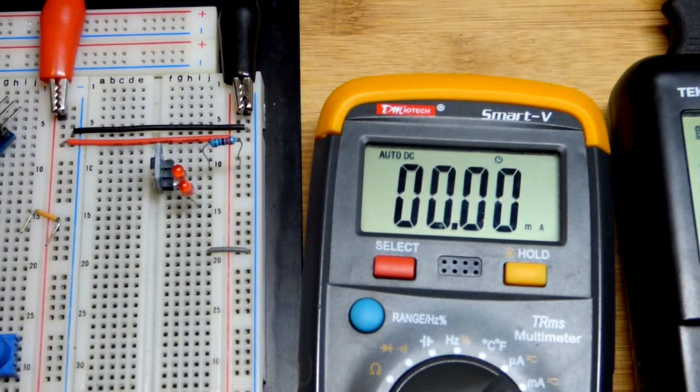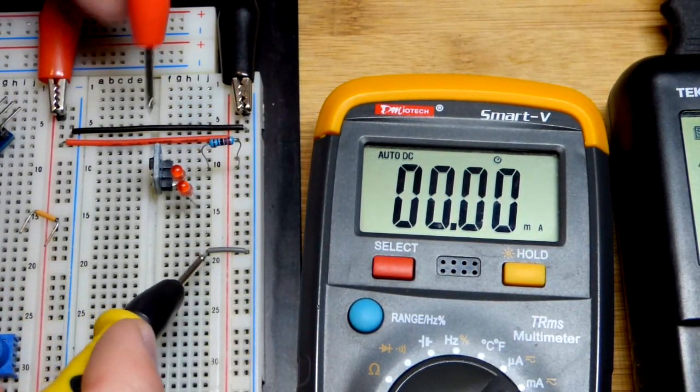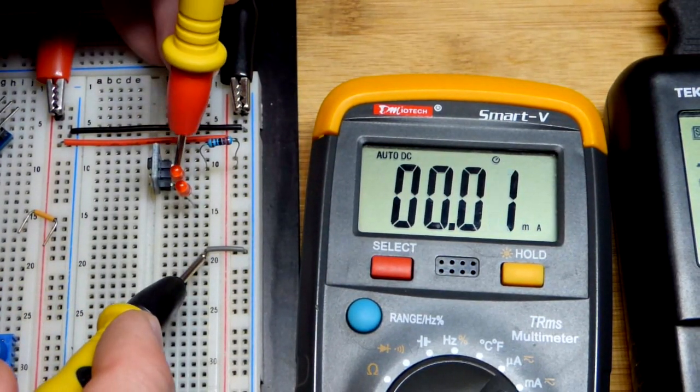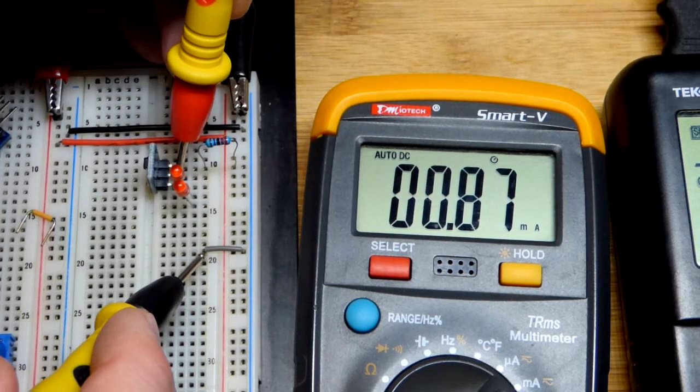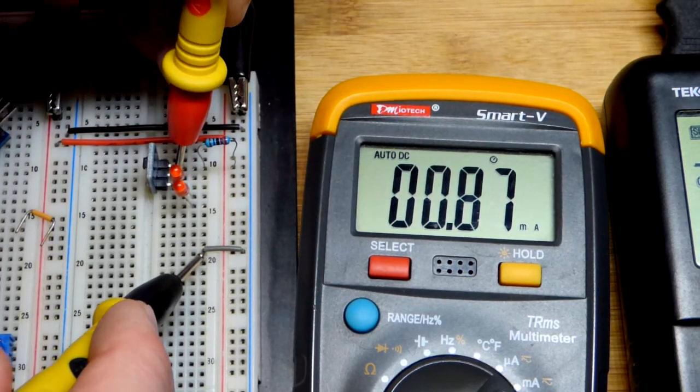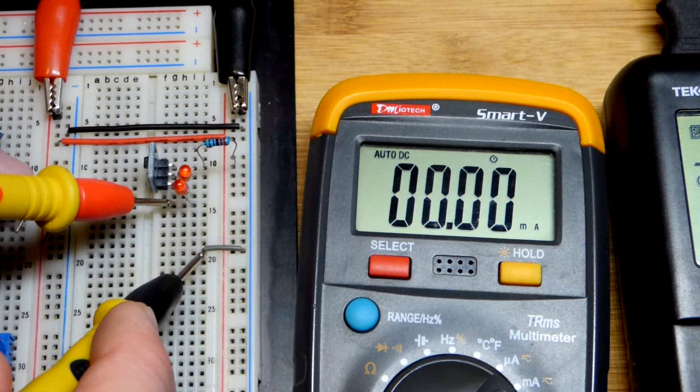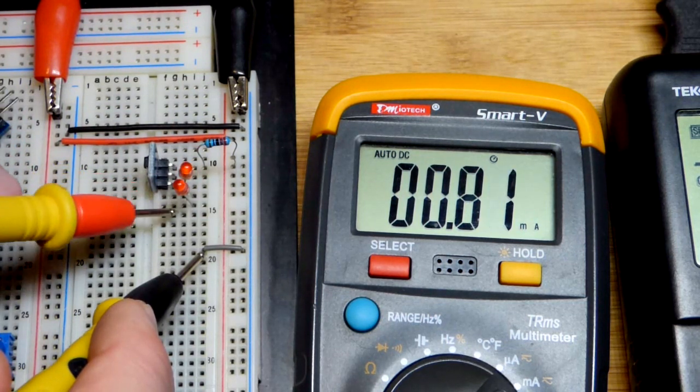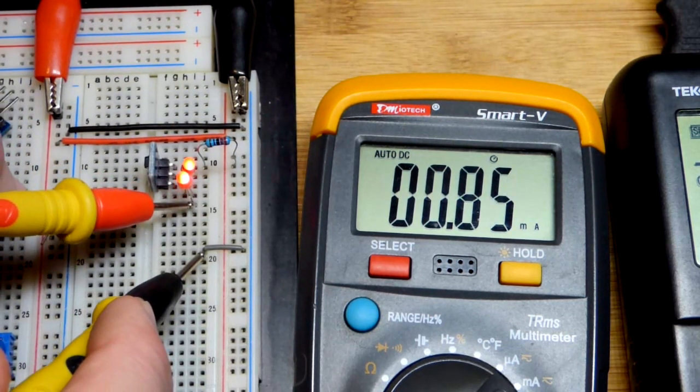Now we should get back to 1 milliamp. I'm going to bypass the LEDs first. We'll look at the current just through the component - 0.87. Now we'll do one LED, 0.87, and the other, 0.85.